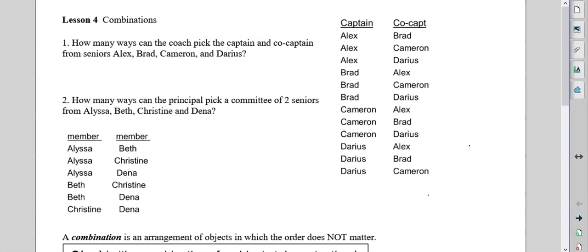How many ways can the coach pick a captain and a co-captain from the seniors Alex, Brad, Cameron, and Darius? So in this case, you have four, and then you do your calculator, NPR, two, and you will get 12.